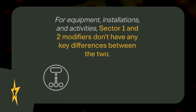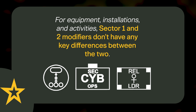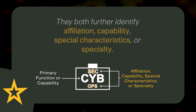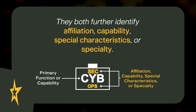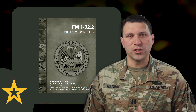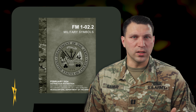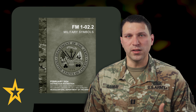For equipment, installations, and activities, sector 1 and 2 modifiers don't have any key differences between the two. They both further identify affiliation, capability, special characteristics, or specialty. And again, all of these modifier symbols and which sector they go in are listed in the field manual.